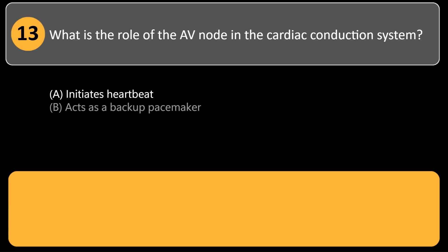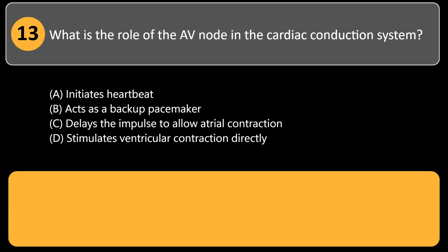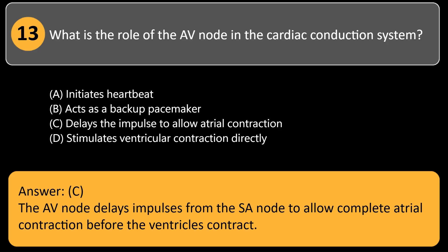What is the role of the AV node in the cardiac conduction system? A. Initiates heartbeat. B. Acts as a backup pacemaker. C. Delays the impulse to allow atrial contraction. D. Stimulates ventricular contraction directly. Answer: C. The AV node delays impulses from the SA node to allow complete atrial contraction before the ventricles contract.